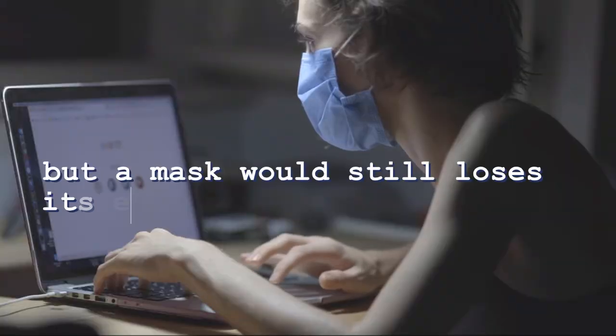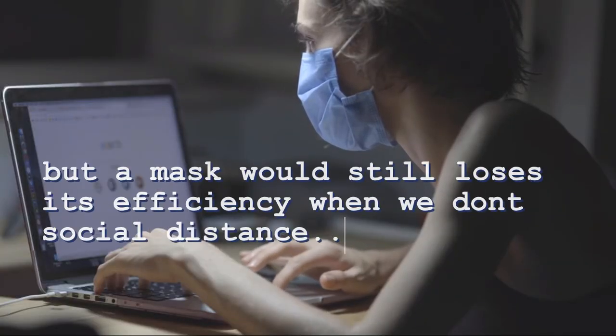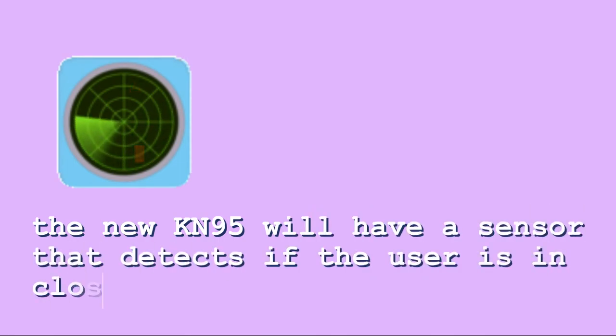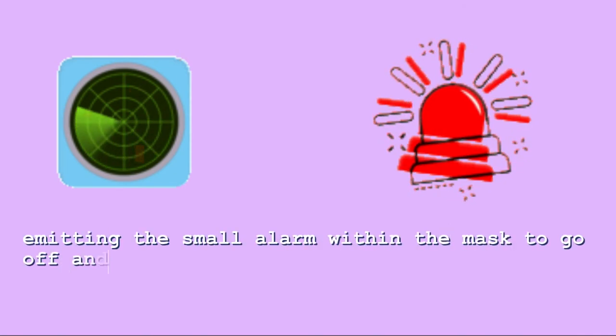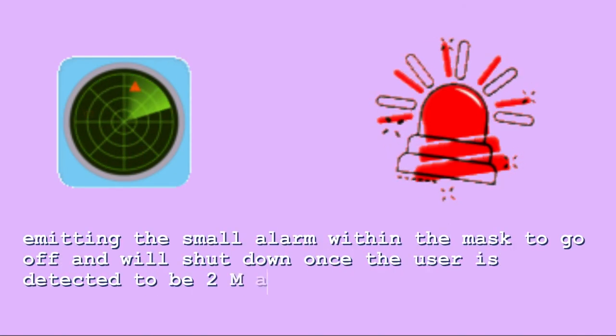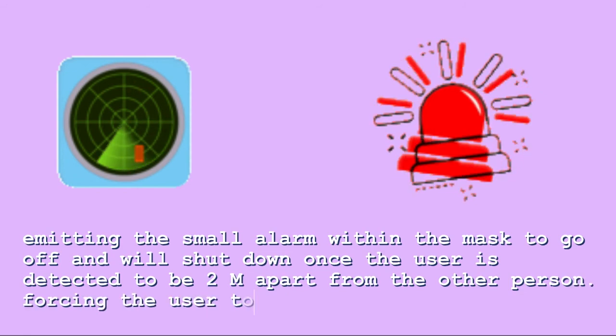But a mask will still lose its efficiency when we don't social distance. Therefore, the new KN95 will have a sensor that detects when a user is in close proximity to someone. A small alarm within the mask will go off until the user is determined to be 2 meters apart from the other person, forcing the user to social distance.